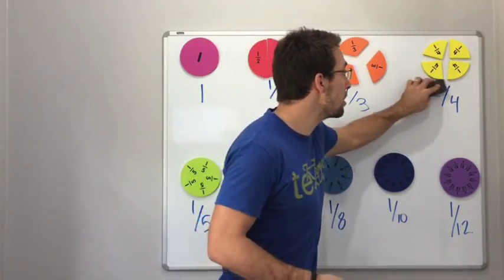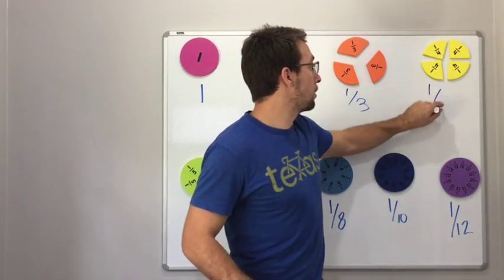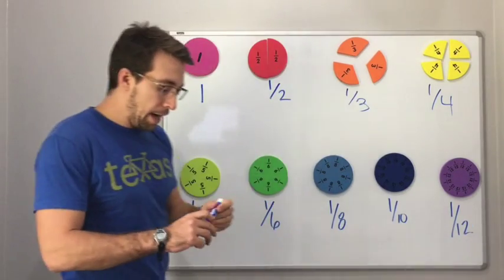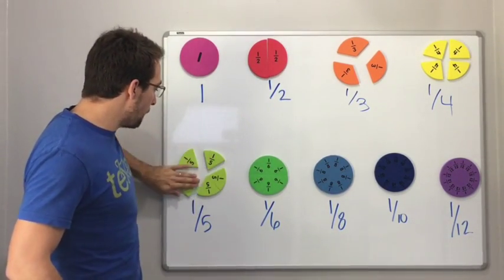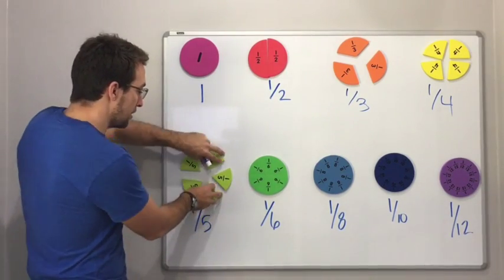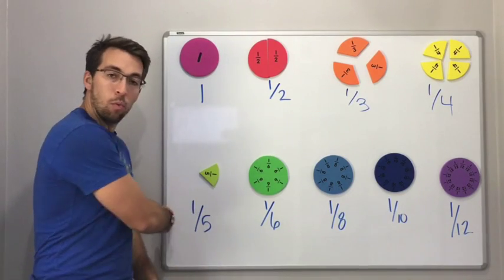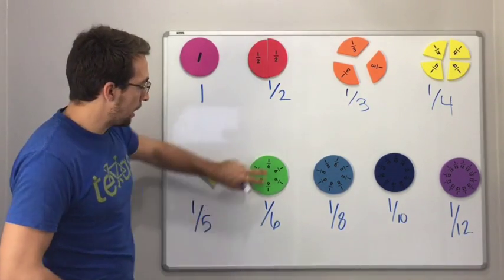So here we are. This is dealing with quarters. And then I'm just going to skim through these. One fifth. If you have a circle and you divide it into five pieces, one, two, three, four, fifth one stays on the board. One fifth.